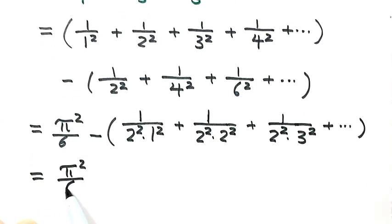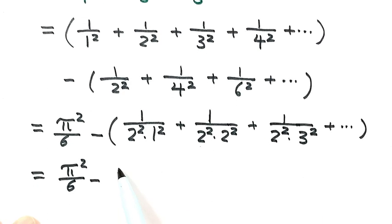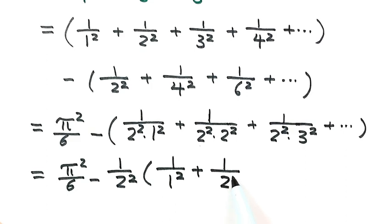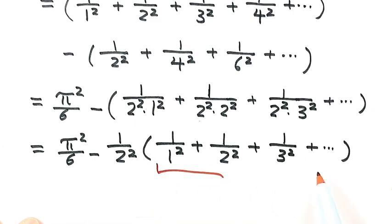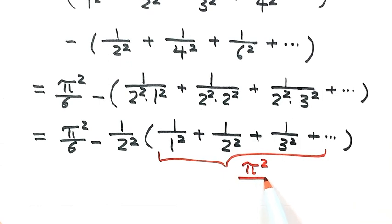Let's take out the common factor from the even terms. They share a common factor of 2², so we factor out 1/2², giving us (1/2²) × (1/1² + 1/2² + 1/3² + ...) inside. Based on the given condition, this inner sum equals π²/6.